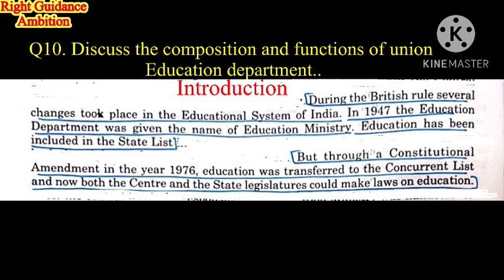The 42nd Amendment changed the constitution, moving education from the state list to the concurrent list. This means both the central and state governments can make laws and policies related to education. In case of conflict between the center and state, the central government's rules will prevail and can overrule the state.